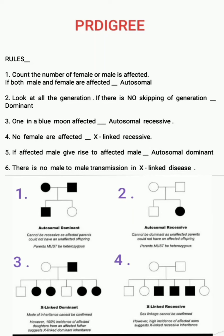Assalamu alaikum dear doctors. In this video I am discussing about pedigree. First we need to know some rules about pedigree. Rule number one: count the number of females or males affected. If both male and female are affected, that is autosomal.